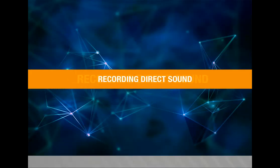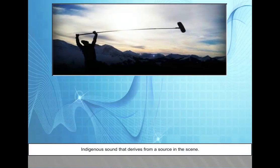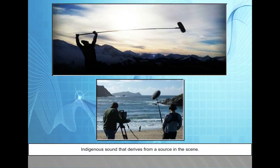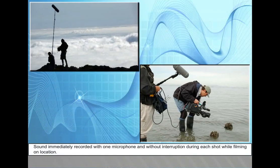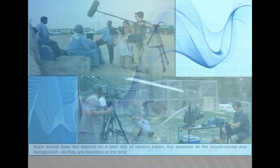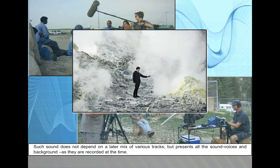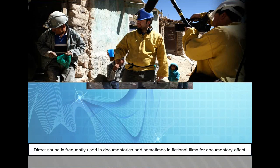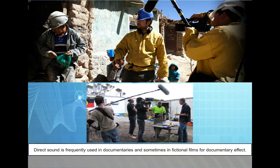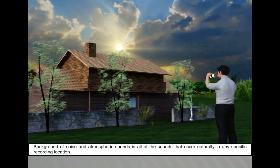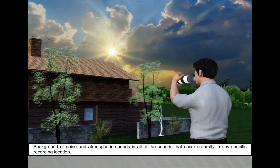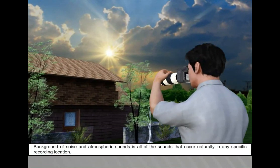Recording direct sound: indigenous sound that derives from a source in the scene. Sound immediately recorded with one microphone and without interruption during each shot while filming on location. Such sound does not depend on a mix of various tracks but presents all sounds — voices and background — as recorded at the same time. Direct sound is frequently used in documentaries and sometimes in fictional films for documentary effect. Background noise and atmospheric sounds are all sounds that occur naturally in any specific recording location.